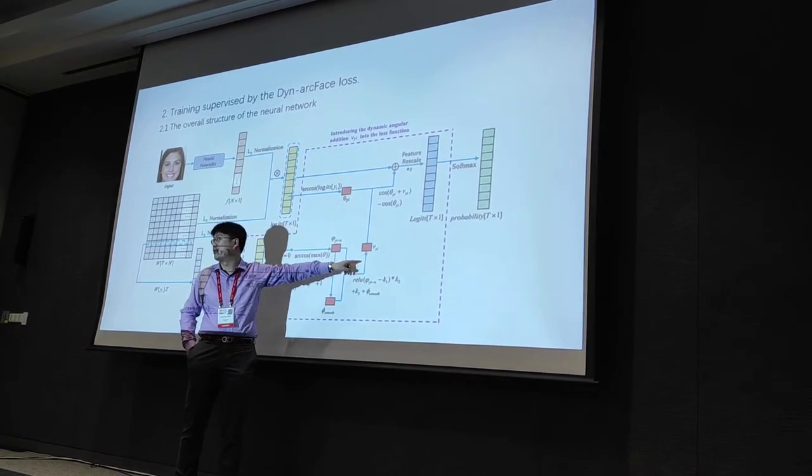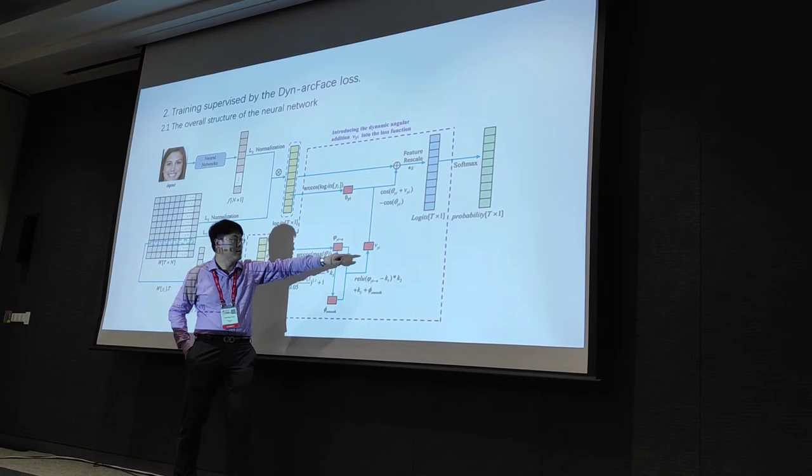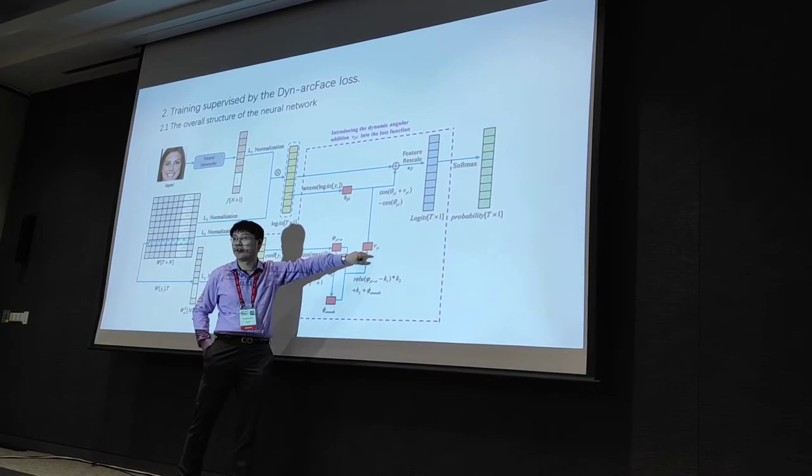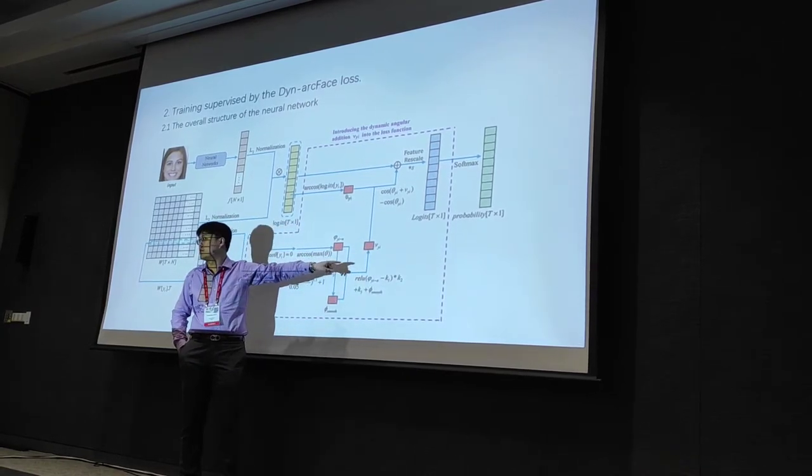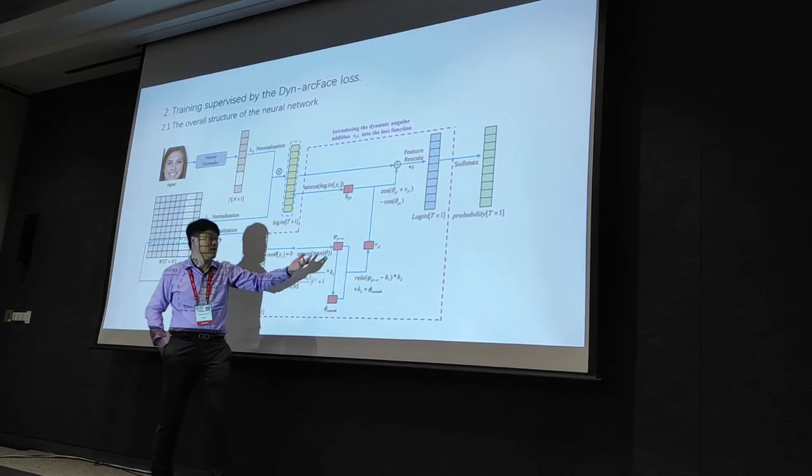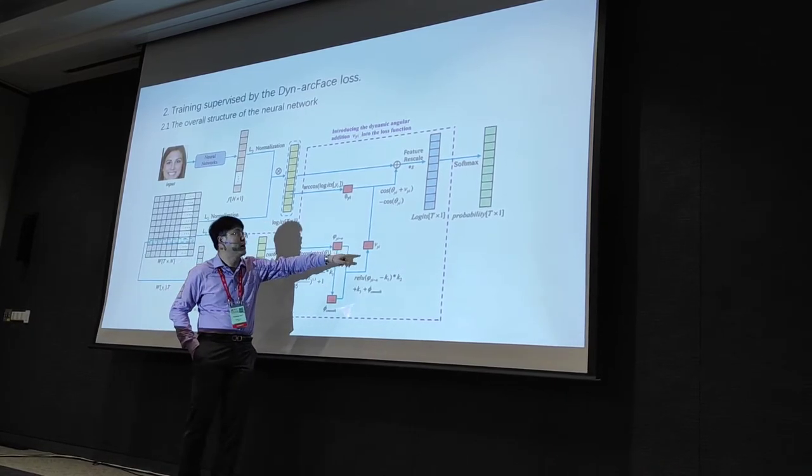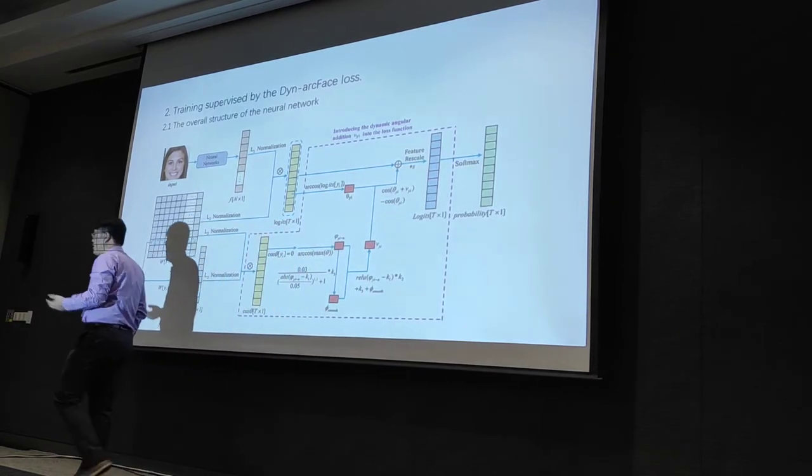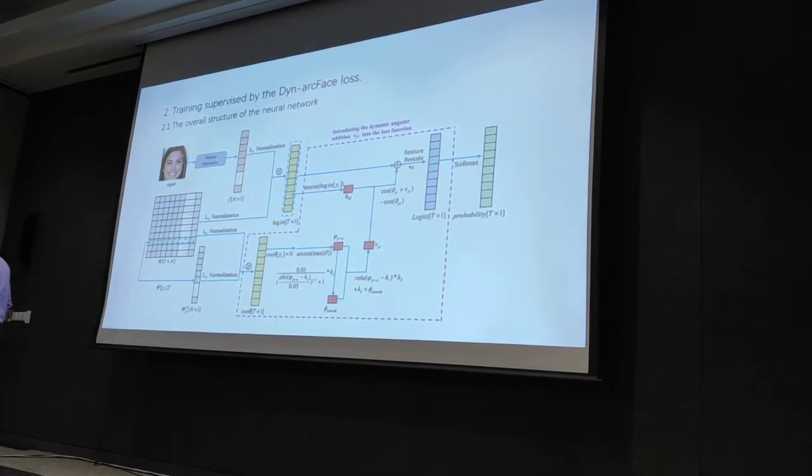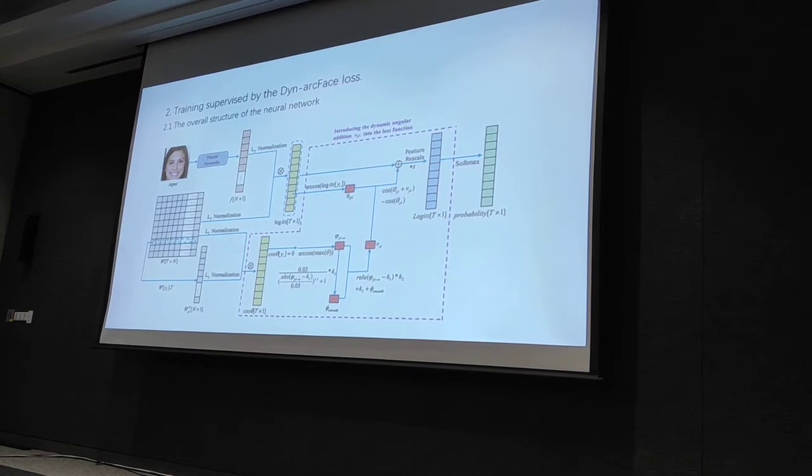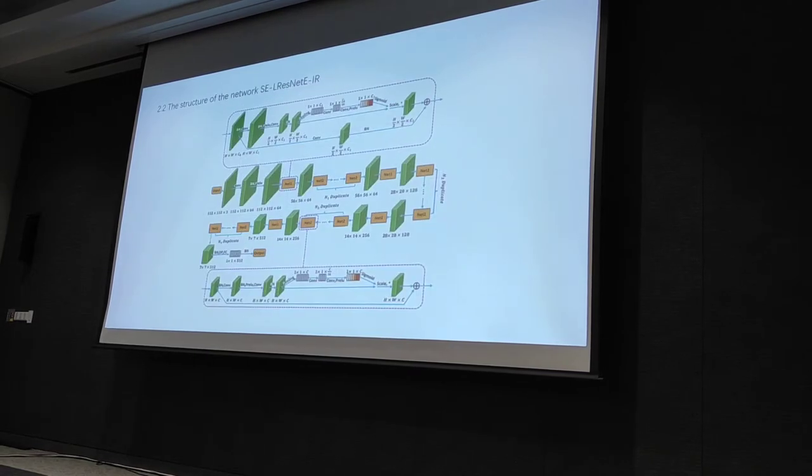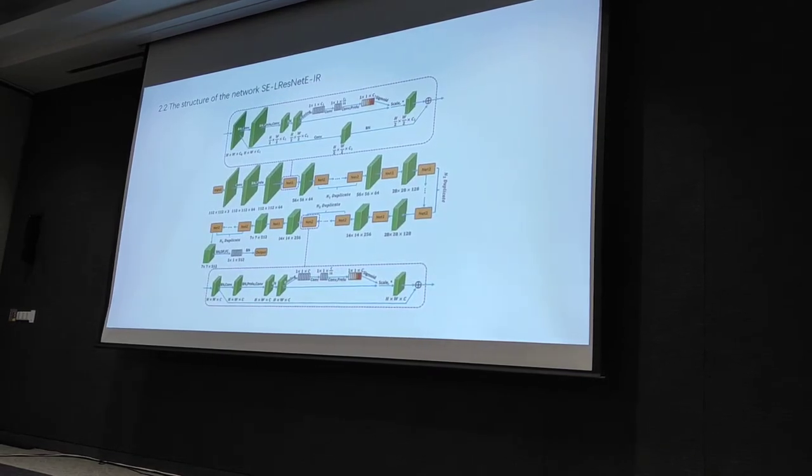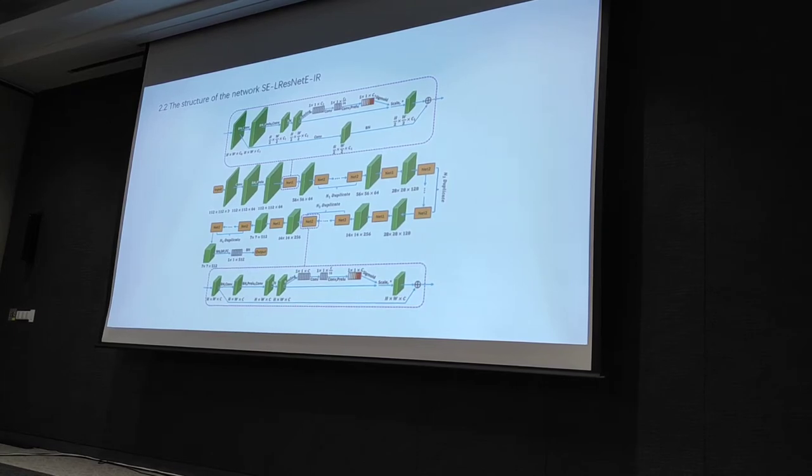If you are very familiar with ArcFace, they use a fixed parameter m here. And I think this parameter here is a key contribution of this work, m_yi. It's adaptive. And this m_yi fits into the training pipeline. And the rest part of the network is quite similar with ArcFace. And this is another way to explain the network and the backbone structure of the neural nets.